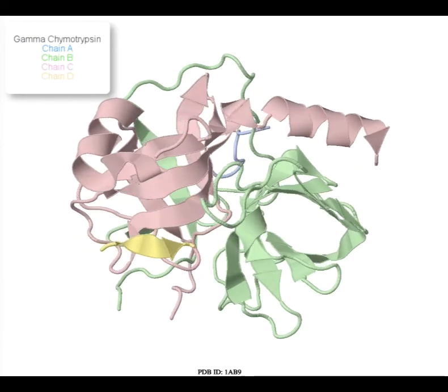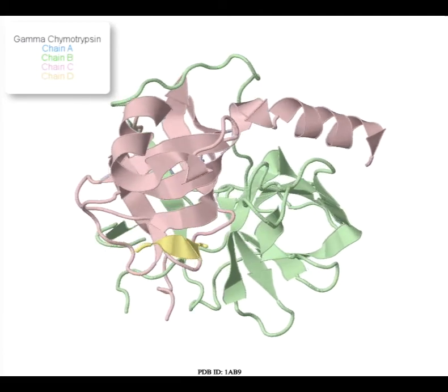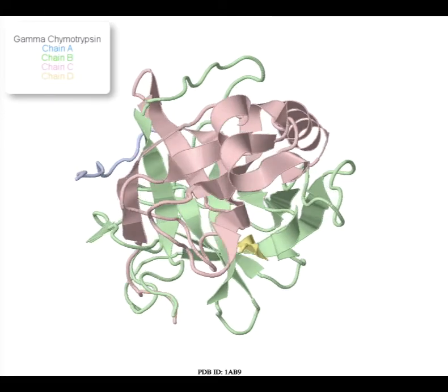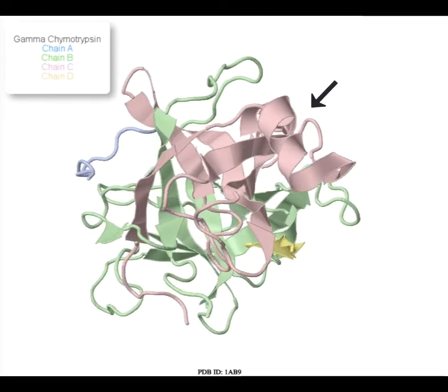Gamma-chymotrypsin consists of four peptide chains: A, B, C, and D. A is shown in blue, B in green, C in pink, and D in yellow.